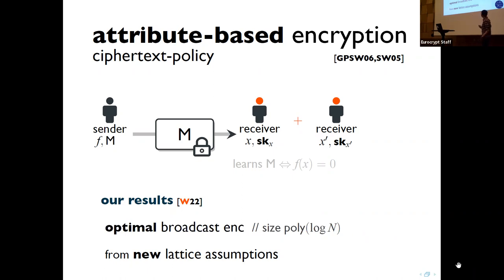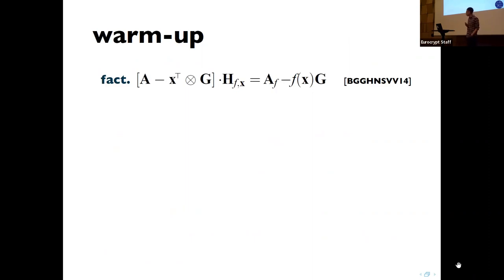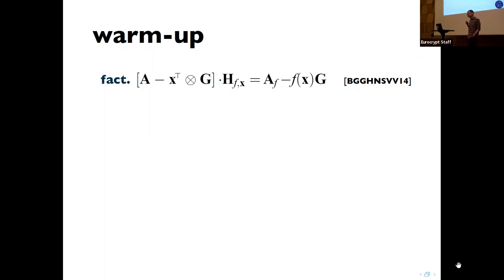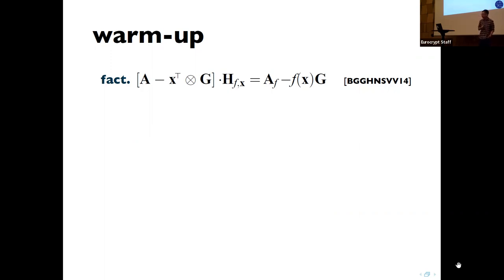I want to give you a sense of what the new construction looks like. As a warm-up, the starting point is what we call the matrix key equation underlying prior ABE schemes from the LWE assumption. Given A minus X ⊗ G — which is shorthand for A_i minus x_i G_i — you can derive A_f minus f(x)·G, where A_f has the same dimension as A_i. Importantly, the size of matrix A_f is much smaller than the size of the circuit f.